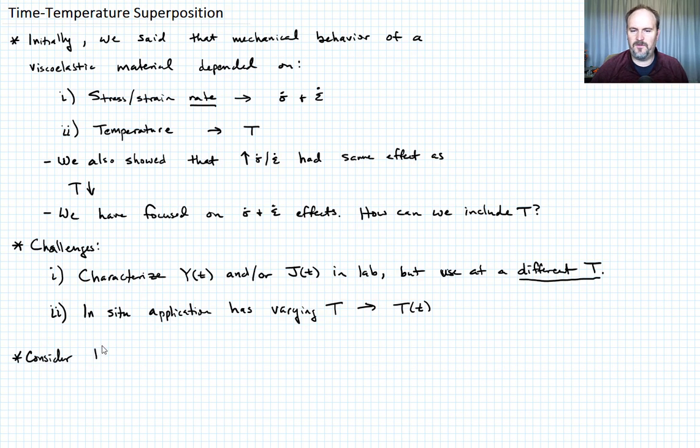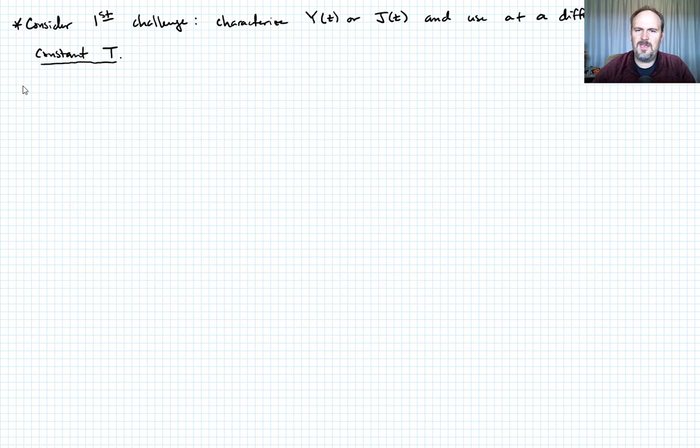So let's go ahead first and consider the first challenge - we want to characterize Y of T or J of T, and then use at a different temperature. And I'm going to say that's a constant temperature. Let me give you a little example just to show you some curves and how temperature affects both relaxation modulus and creep compliance.